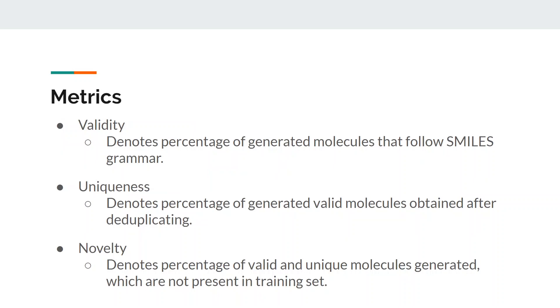We have used the metrics like Validity, Uniqueness, Novelty, KL Divergence and FCD for evaluating our generative approach. The Validity of a molecule is assessed by parsing with the RDKit library. It checks whether the string generated follows the specific grammar or not. To determine the uniqueness of the molecule, it needs to be valid and the model should not generate molecules generated previously. A generated molecule is novel when it is both valid and unique and is not present in the training set.